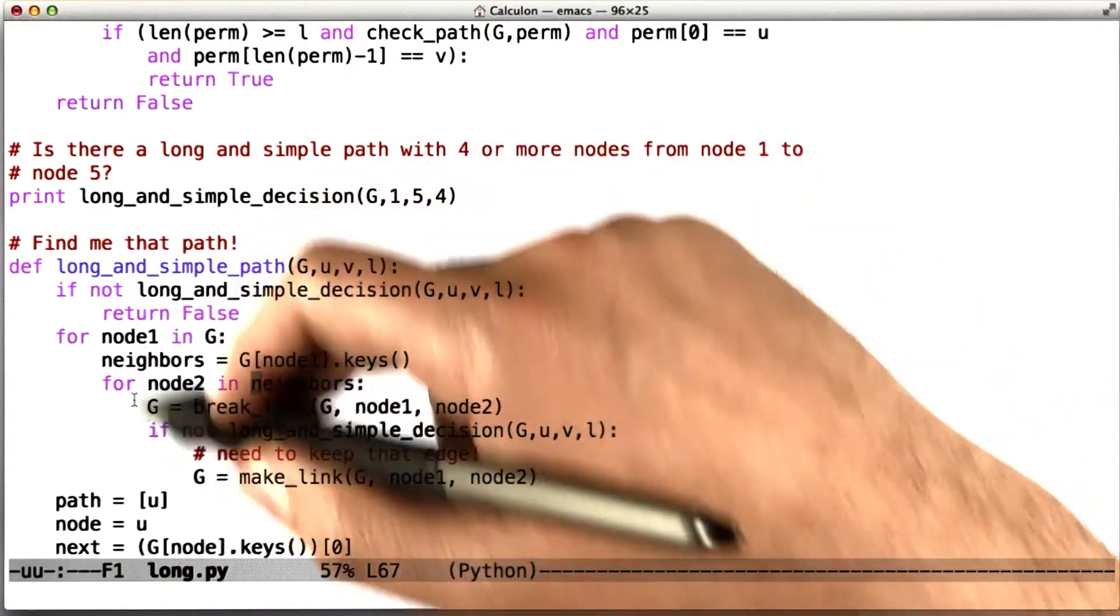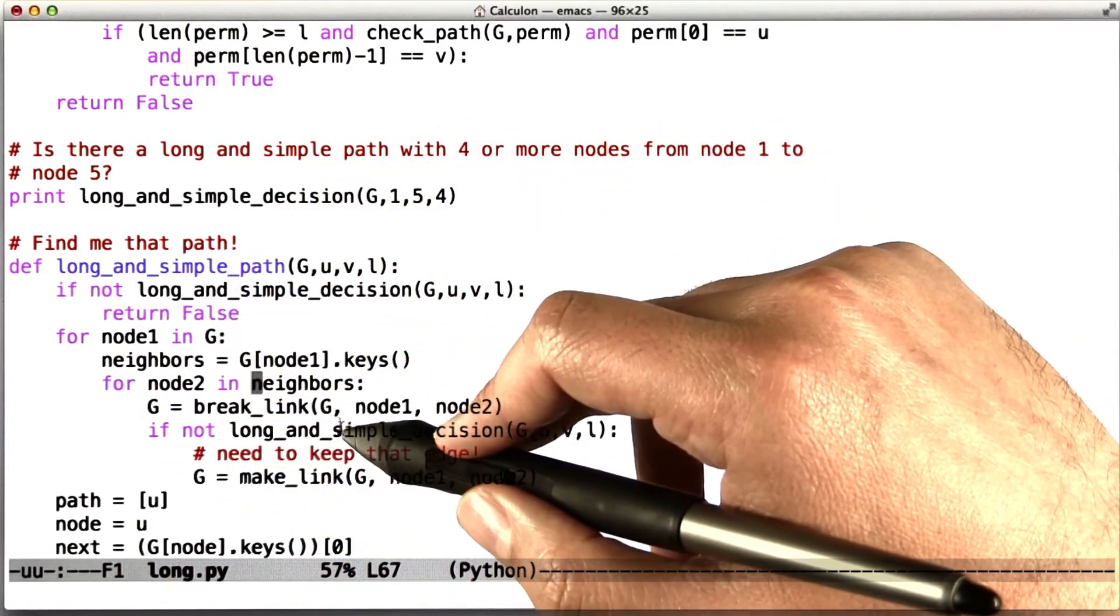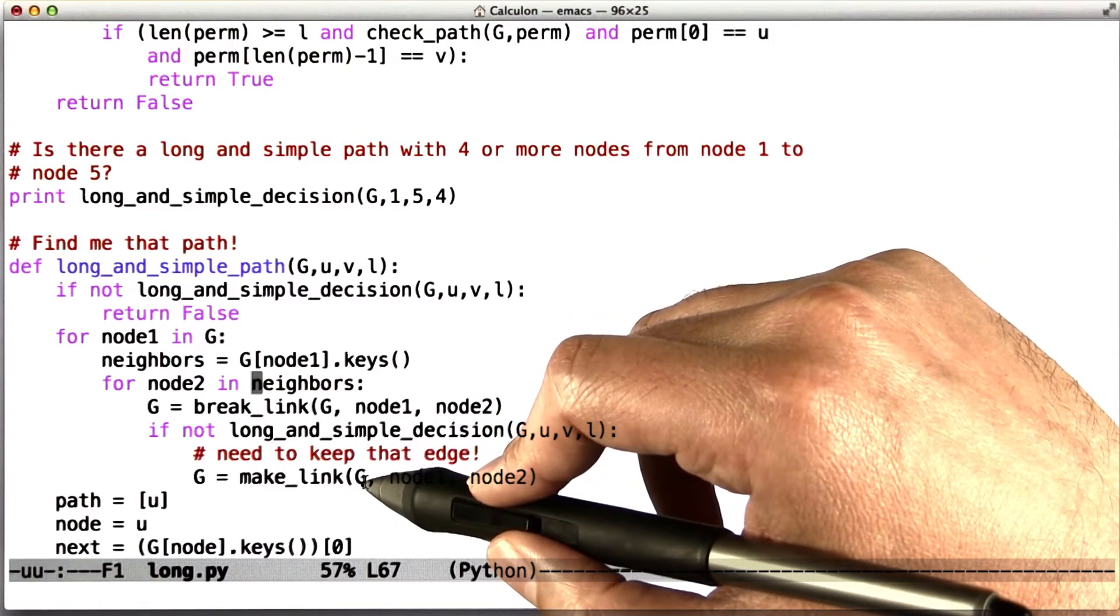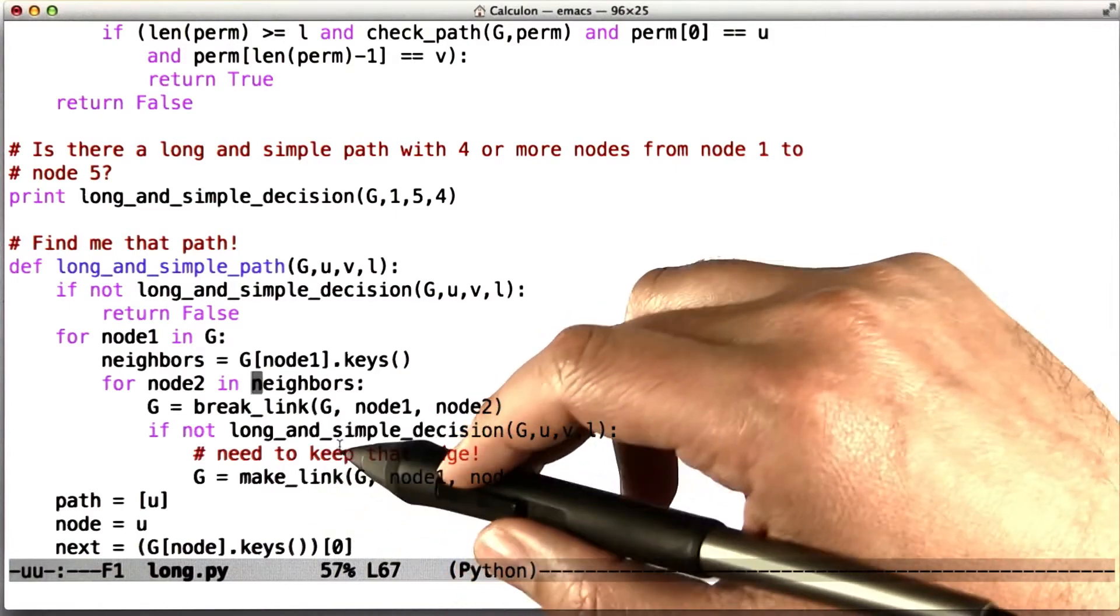We repeat this for all the nodes, all the edges, and then we're basically done. All that's left in G is exactly the simple path, and now we have to read it out.